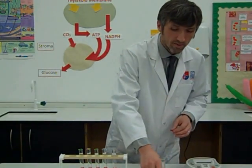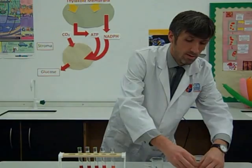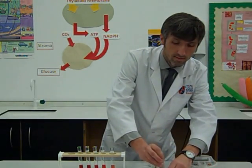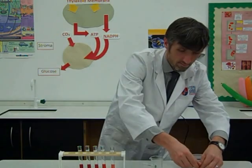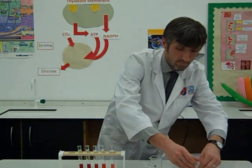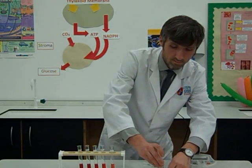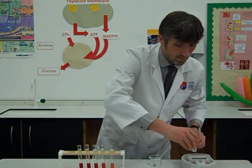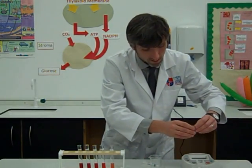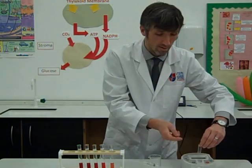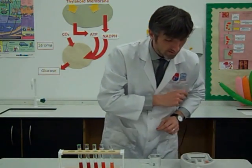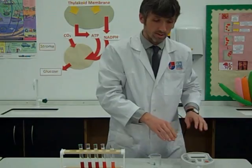To do that, you take a cuvette and fill it with distilled water. Place it in the colorimeter so that the arrow faces towards the arc, and then you press R for referencing it, and that gives you a zero setting.